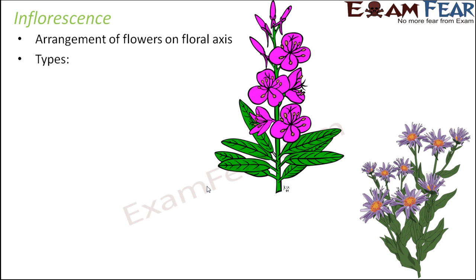Inflorescence is of two types based on whether the main axis keeps growing indefinitely or has limited growth. Inflorescence comes into picture only when a floral axis bears a cluster of flowers. If one floral axis has only one flower, that is known as a solitary flower. But when there is a bunch of flowers, we talk about inflorescence.